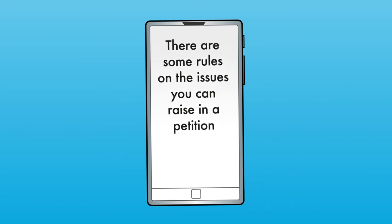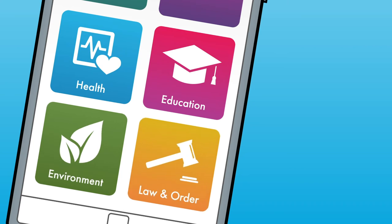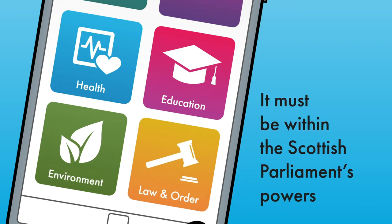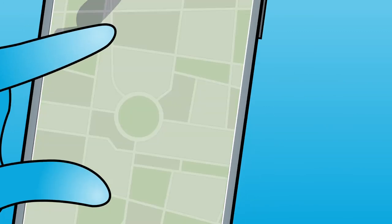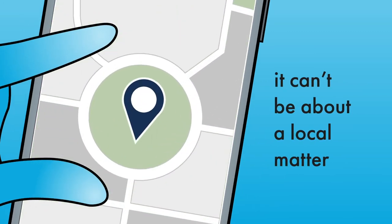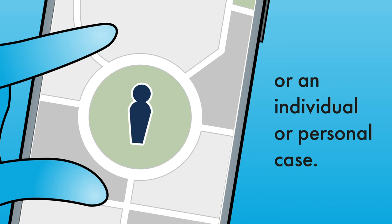There are some rules on the issues you can raise in a petition. It must be within the Scottish Parliament's powers, relate to national policy or practice. It can't be about a local matter, individual person or personal case.